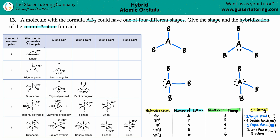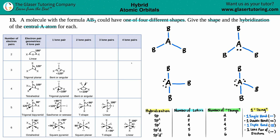Technically this should come from memory if this was on a test or quiz. For the first shape, the central atom is surrounded by three B's with no lone pairs. Looking at the geometry table — do you see how we have the central atom surrounded by three X's without any lone pairs? This is called trigonal planar. That's the shape for the first one.